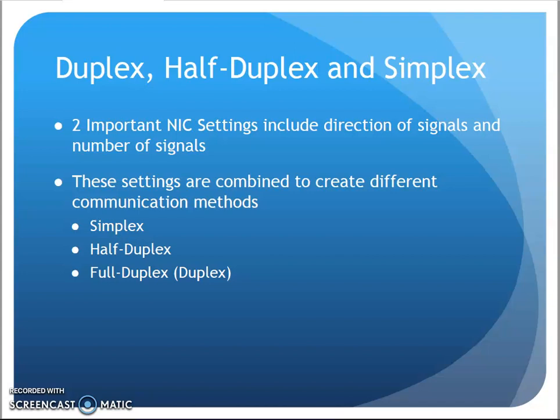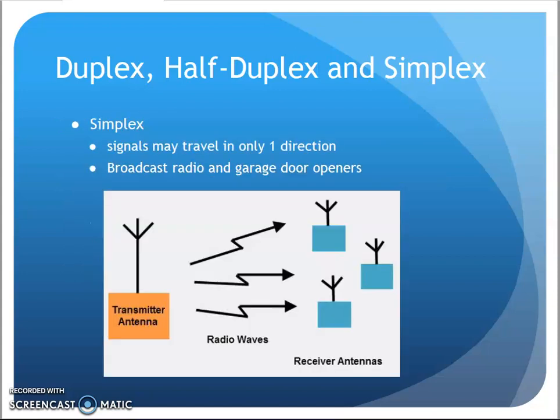When we talk network cards and communication networks, we tend to run into these terms: simplex, half-duplex, full-duplex. Simplex is signals that travel in only one direction — something like listening to a radio station. That radio station is just broadcasting signal out to you. You can yell at your radio all you want; they're not going to hear you. It's a one-way communication.